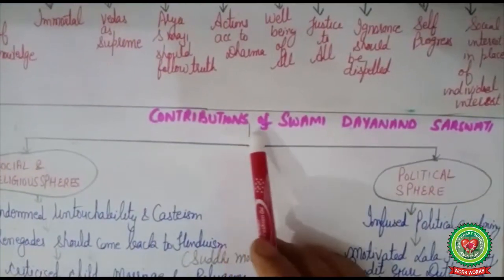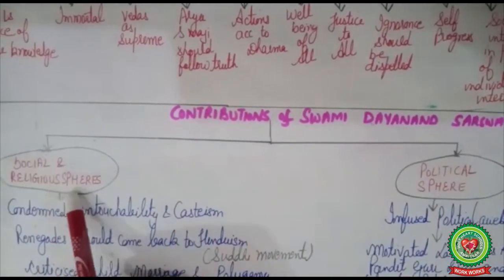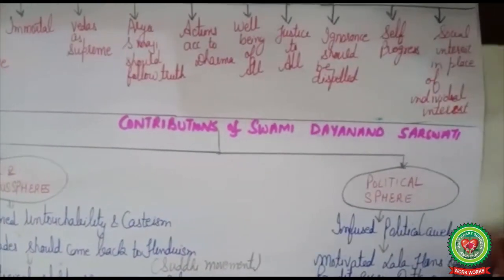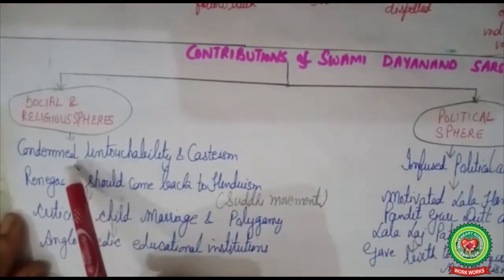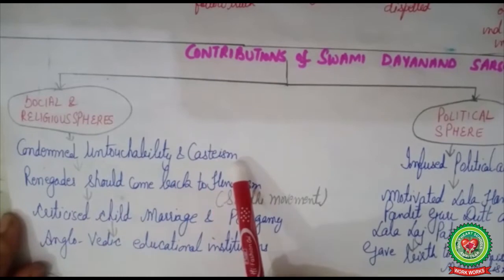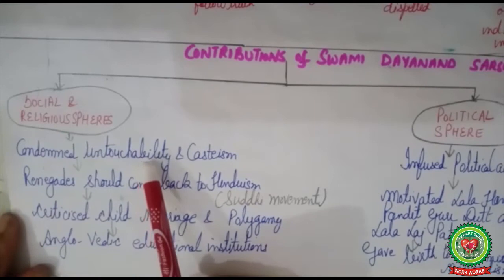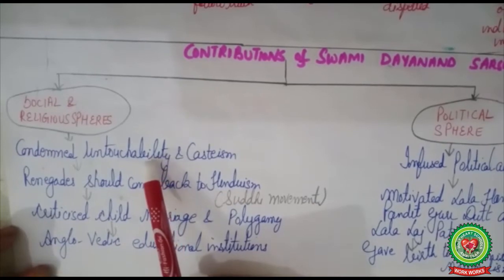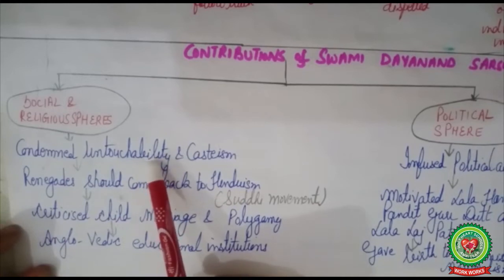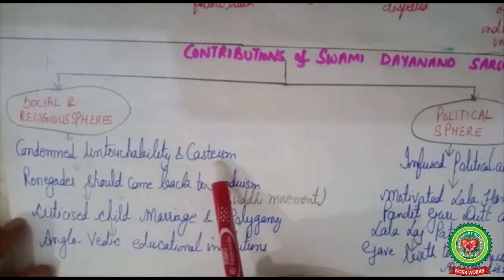We will now discuss the contributions of Swami Dayananda Saraswati. He contributed mainly in two spheres: social and religious, and also in the political sphere. In the social and religious sphere, Swami Dayananda Saraswati condemned untouchability and casteism. Untouchability was a practice in which upper castes treated lower castes very badly, declaring themselves impure if touched by them. Swami Dayananda Saraswati strongly refuted this idea.